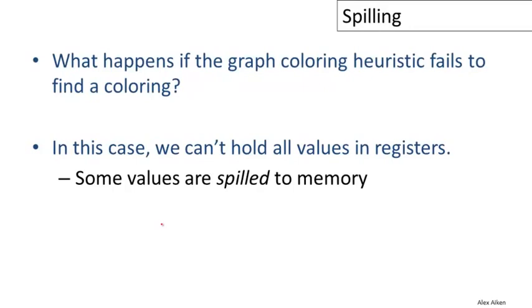The graph coloring heuristic that we discussed in the previous video doesn't always succeed in coloring an arbitrary graph. It may well get stuck and not be able to find a coloring. In that case, the only conclusion we can reach is that we can't hold all the values that we'd like to in registers.